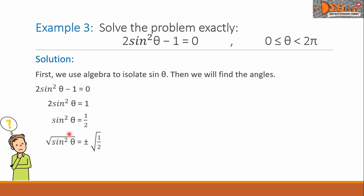On the left side, we can cancel this radical and the power 2. So we have sin θ on the left equals plus or minus—this expression can be simplified into 1 over square root of 2. If we rationalize the denominator, this will now be plus or minus square root of 2 over 2.